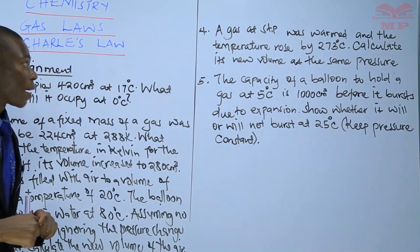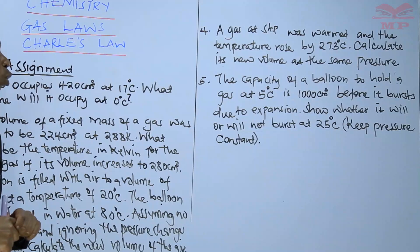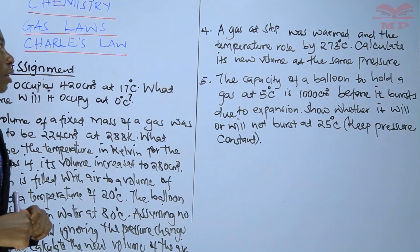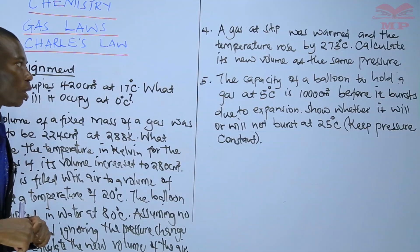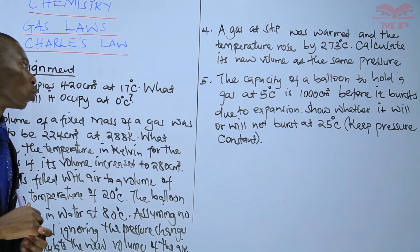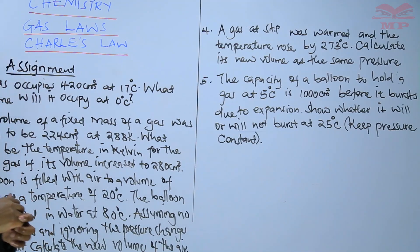And lastly, the capacity of a balloon to hold a gas at 5 degrees Celsius is 1000 centimeters cubed before it bursts due to expansion. Show whether it will or will not burst at 25 degrees Celsius then keep pressure constant.